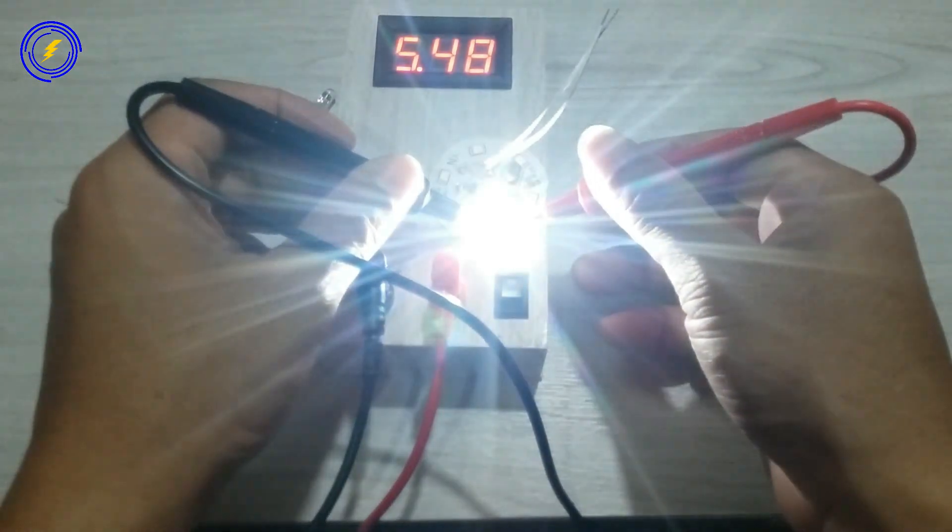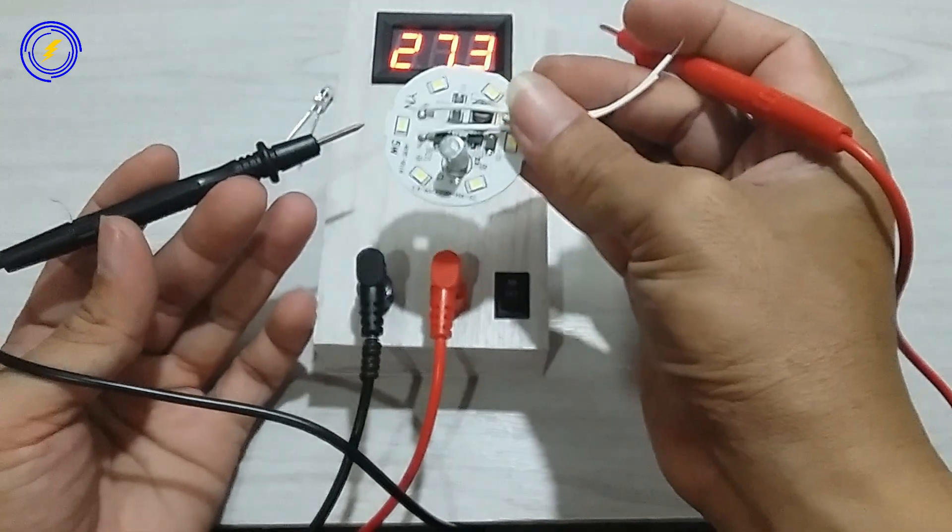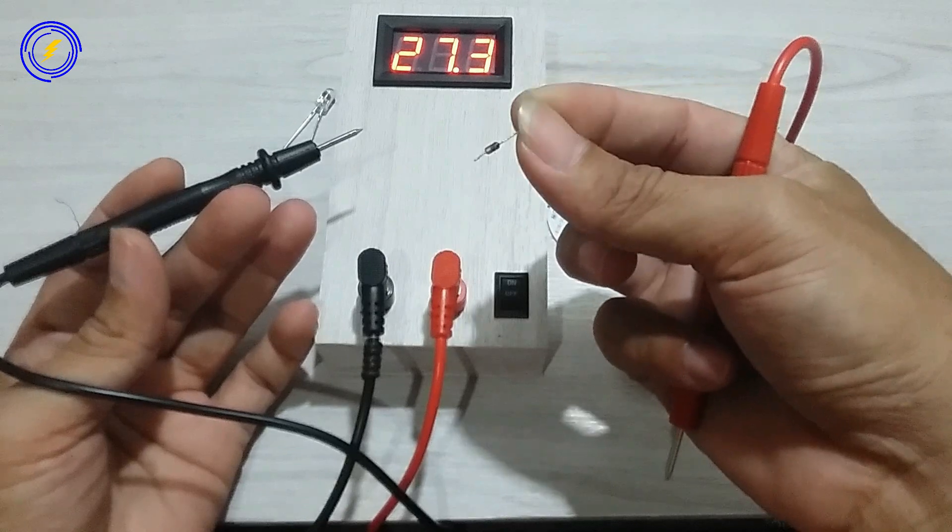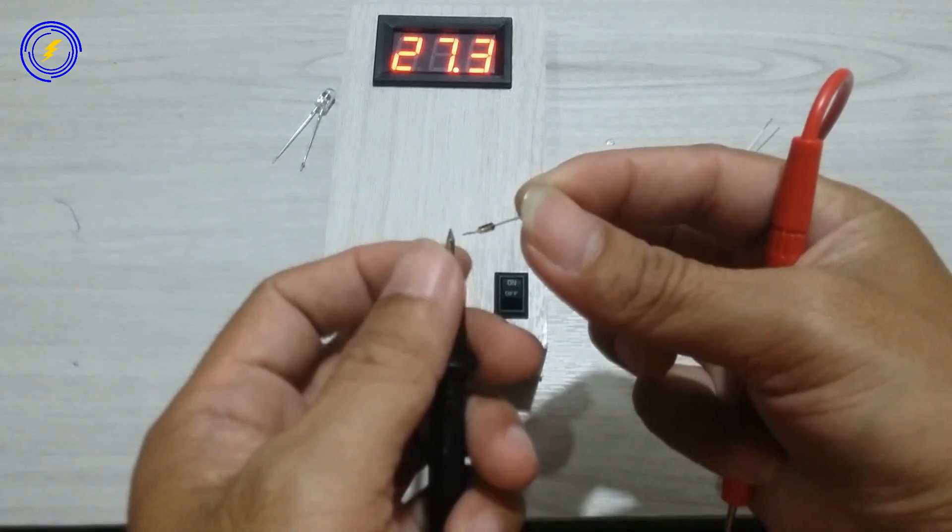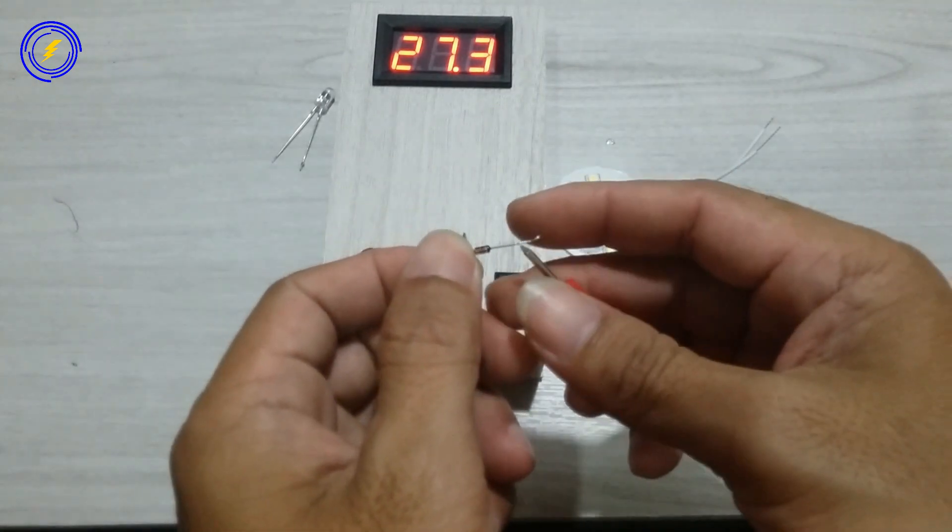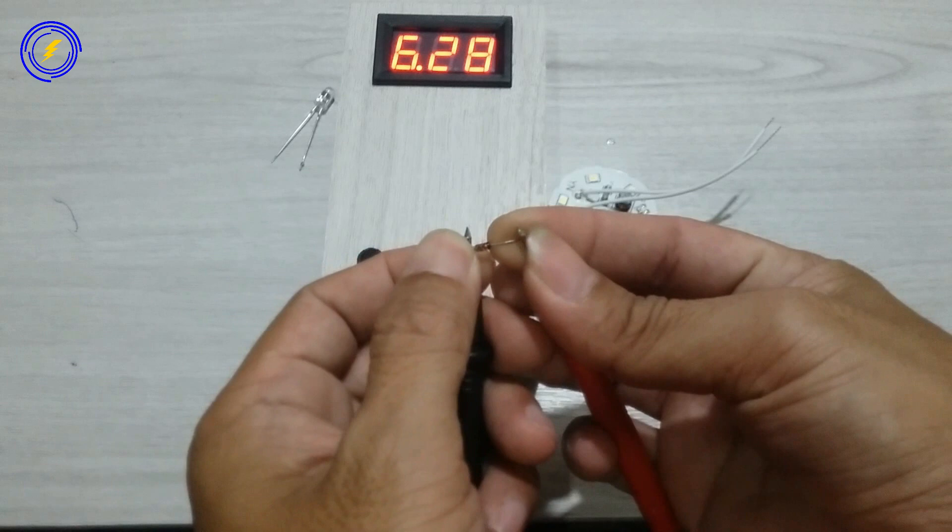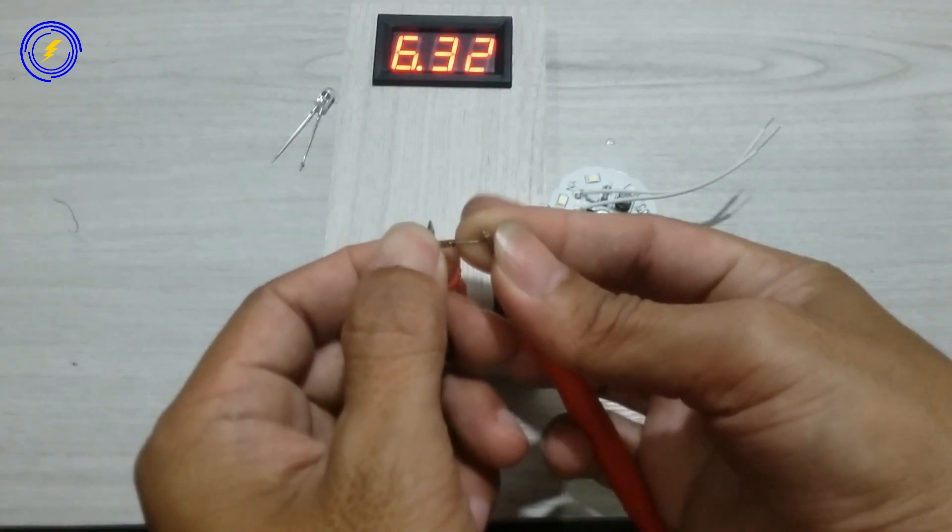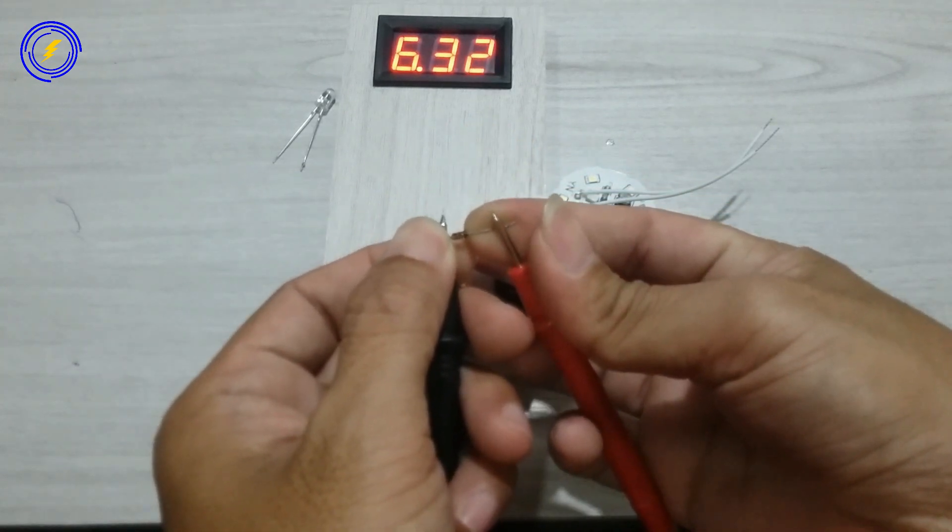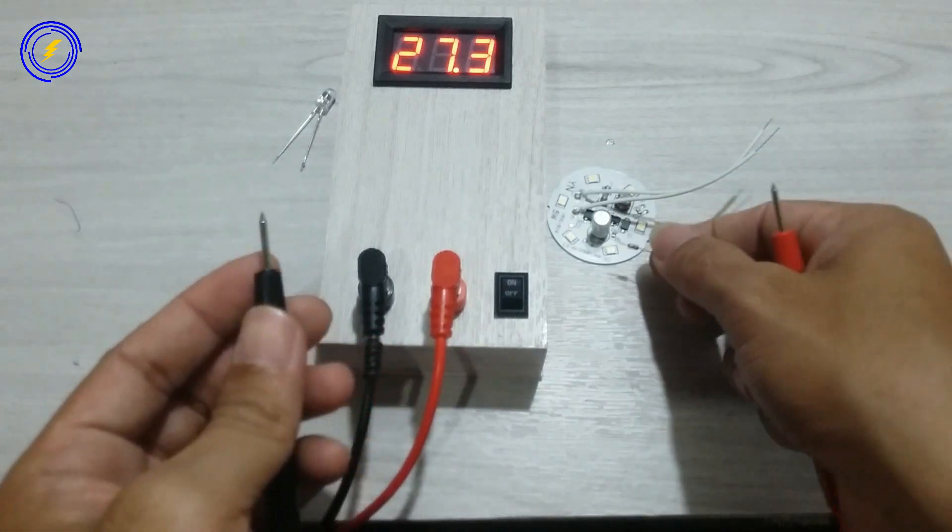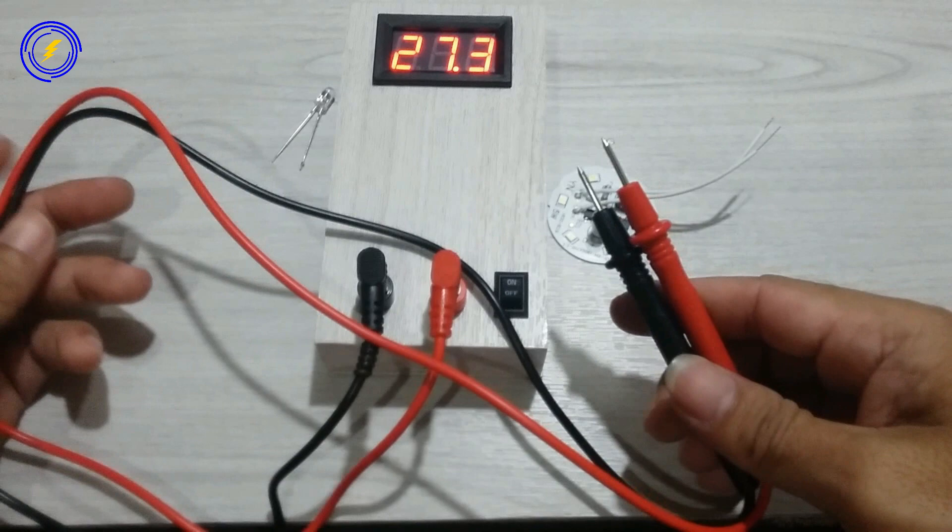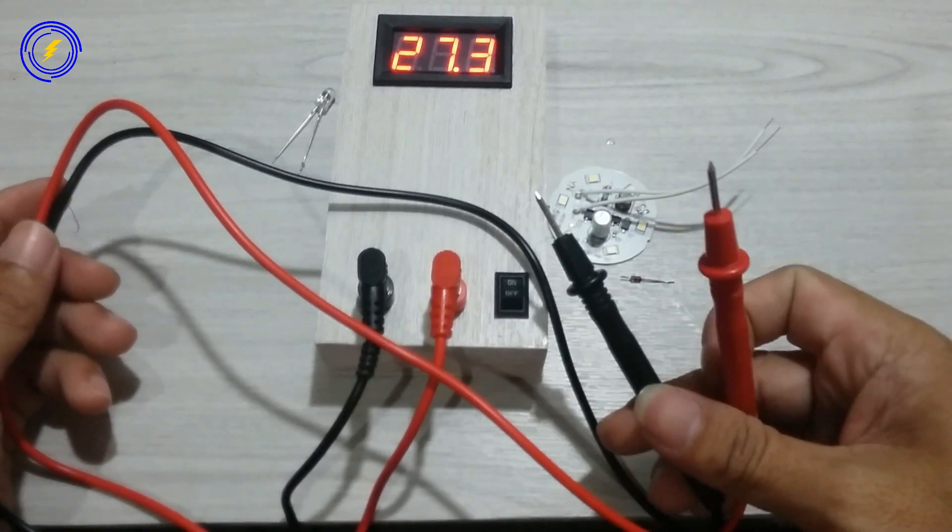Alat ini aman digunakan karena sudah auto volt. Akan saya coba menggunakan zener apakah bisa untuk cek zener. Terdapat angka 6,3. Berarti alat ini bisa untuk ngecek dioda zener. Semoga video ini bermanfaat. Jangan lupa untuk like and subscribe. Nantikan video-video berikutnya.